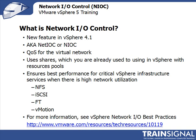It's quality of service for the virtual network, and it uses shares — which you're already used to in vSphere with resource pools, configuring shares for CPU and memory. Now you're configuring shares for network quality of service as well. NIOC ensures the best performance for critical vSphere infrastructure services like NFS, iSCSI, fault tolerance, and vMotion when there's high network utilization. But you may also want to give high priority to Tier 1 applications that might be negatively affected by lower-priority vMotion or backup traffic using NFS.